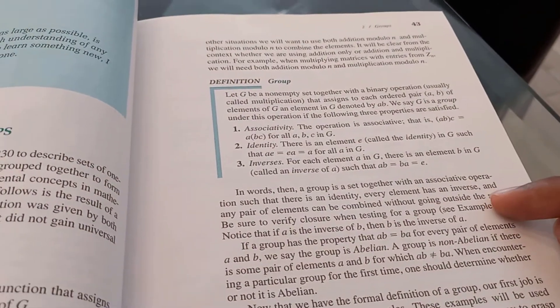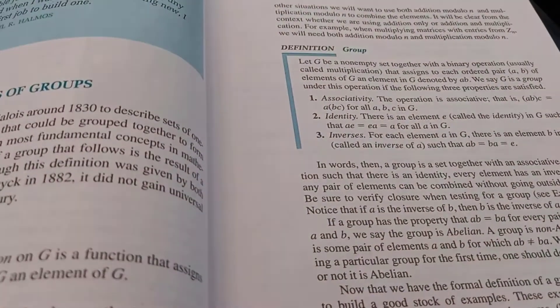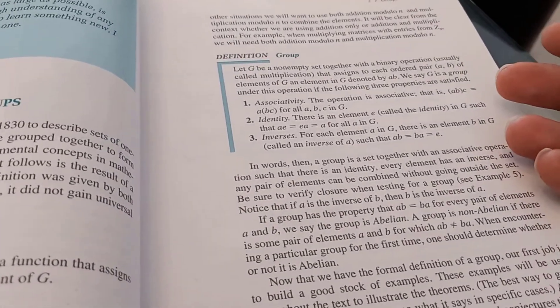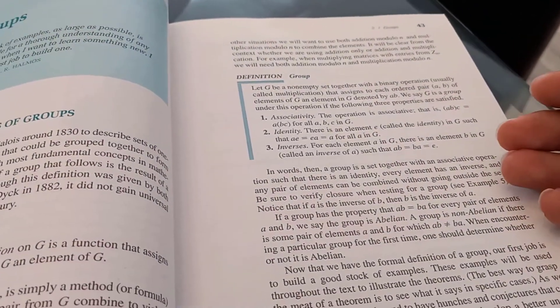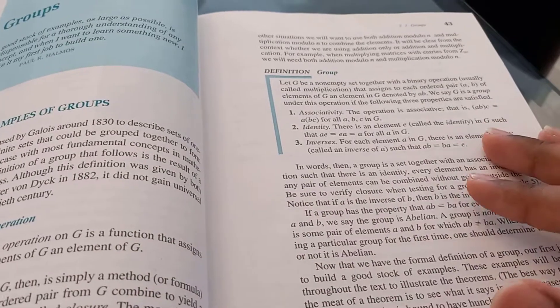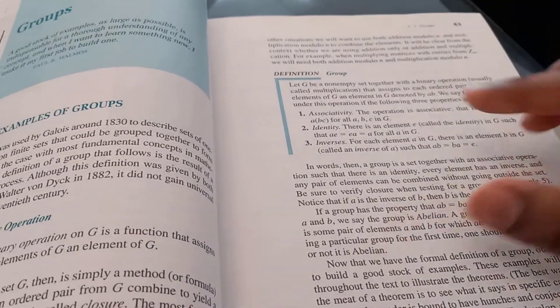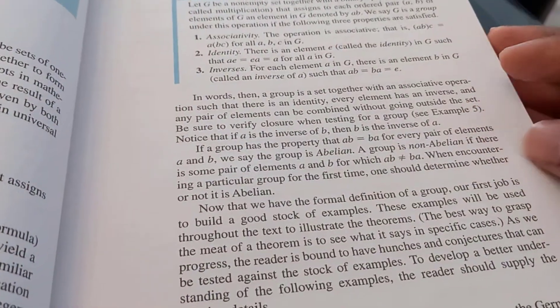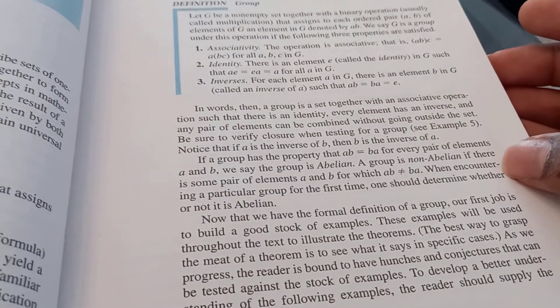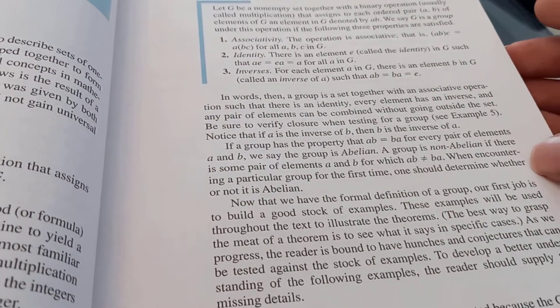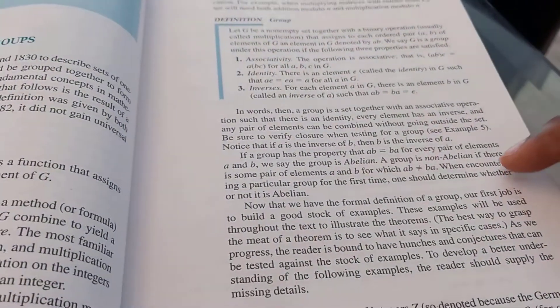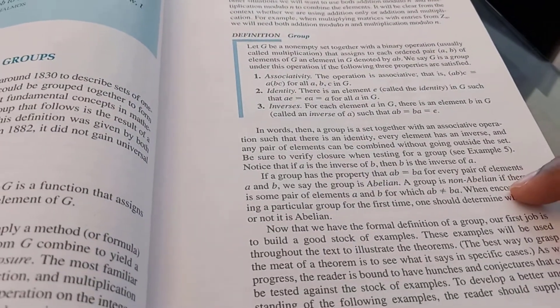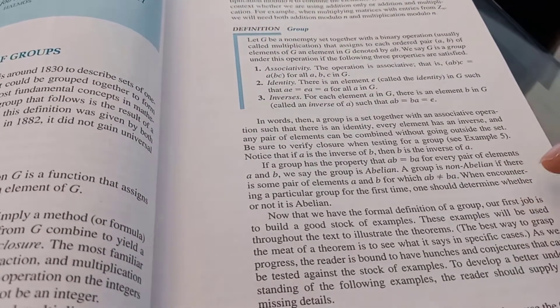So that should stick out to you. And every time you see something that is apparently a group, you should check closure. And oftentimes new students who are just starting abstract algebra will forget about closure. They will focus mostly on these three properties. Also, there's another tip when encountering a particular group for the first time. Determine whether or not it's abelian. These little tips in these discussions, don't ignore them. They're very important. You should take note of them and act on them.